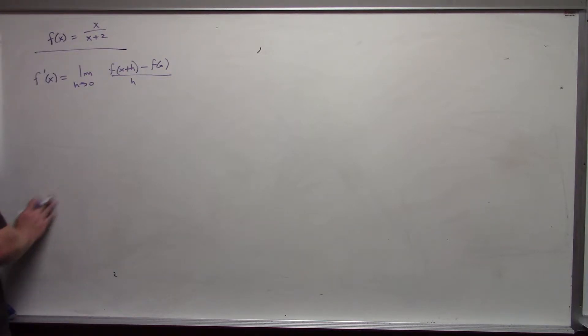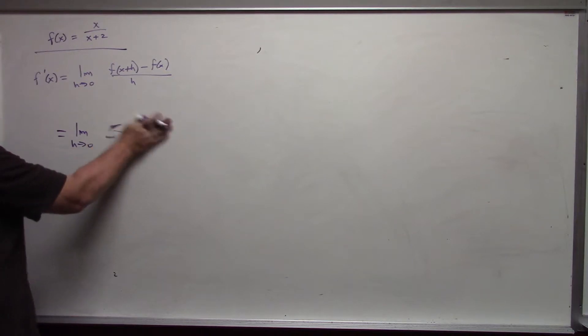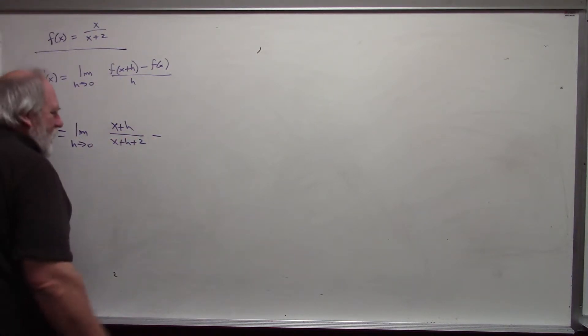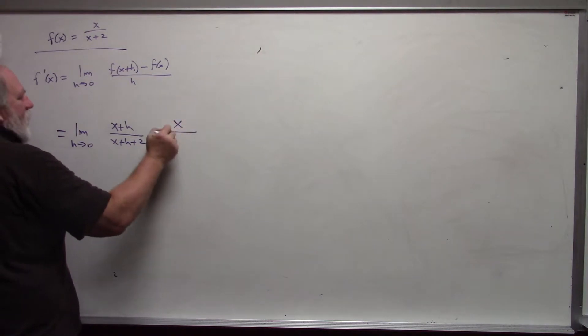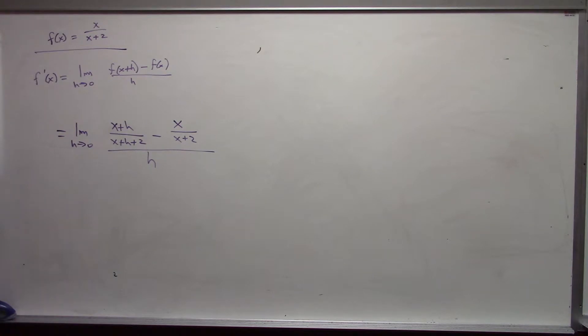In this particular case, this becomes limit h approaches 0. f of x plus h would be x plus h over x plus h plus 2 minus x over x plus 2 all divided by h. Just replace every x with x plus h. That's f of x plus h, f of x, all divided by h, the limit.